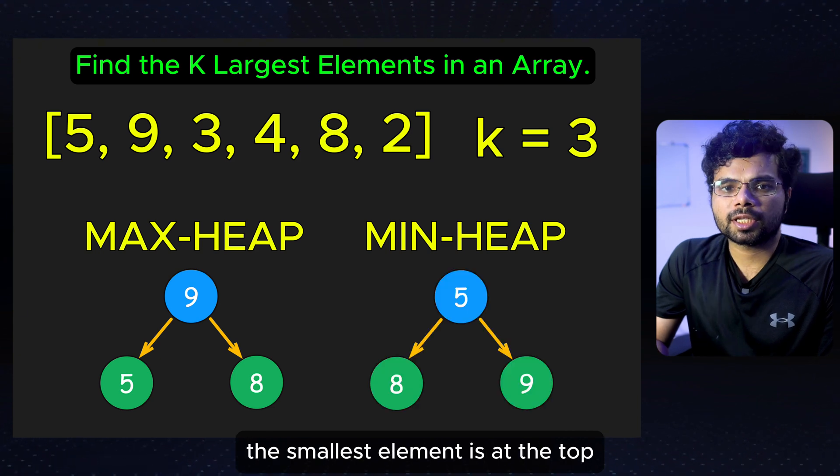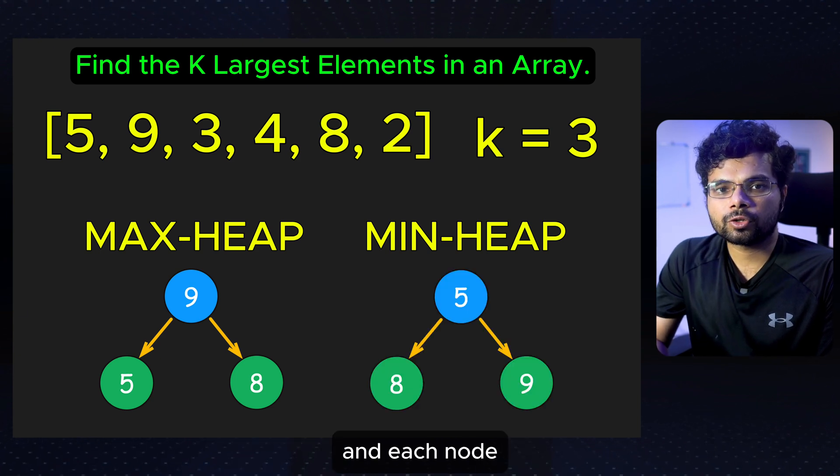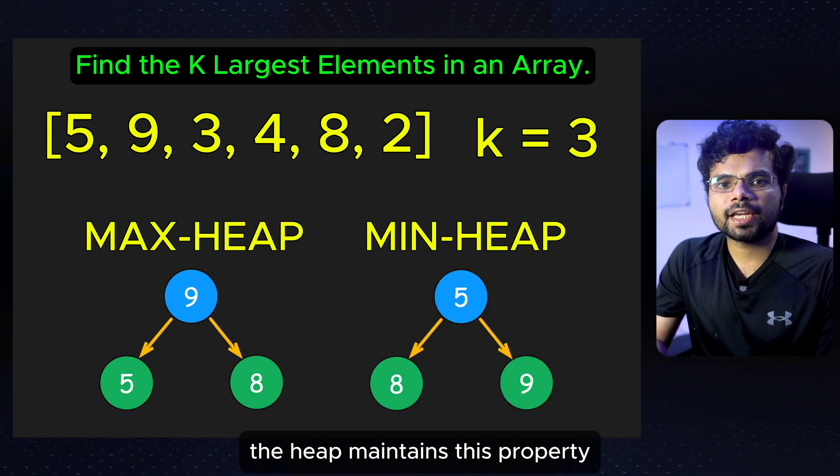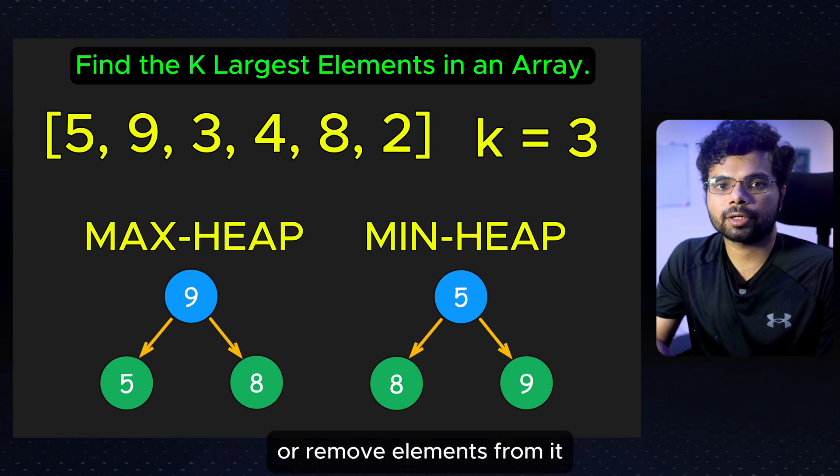A min heap is the opposite. The smallest element is at the top, and each node is smaller than its children. The heap maintains this property whenever we add or remove elements from it.